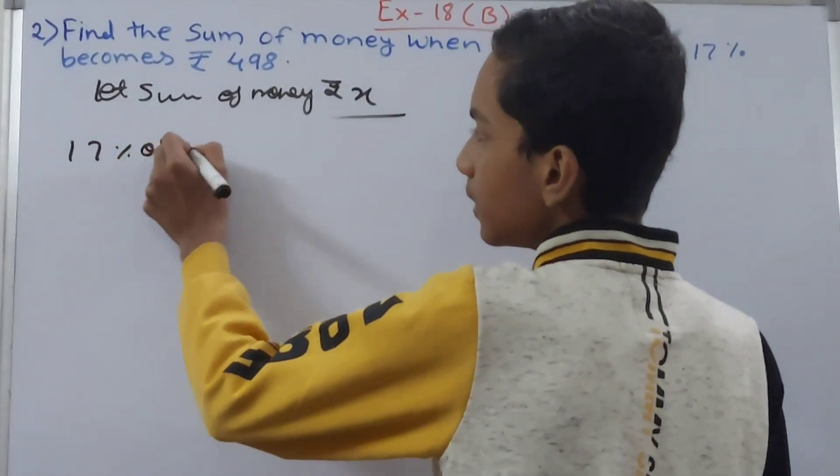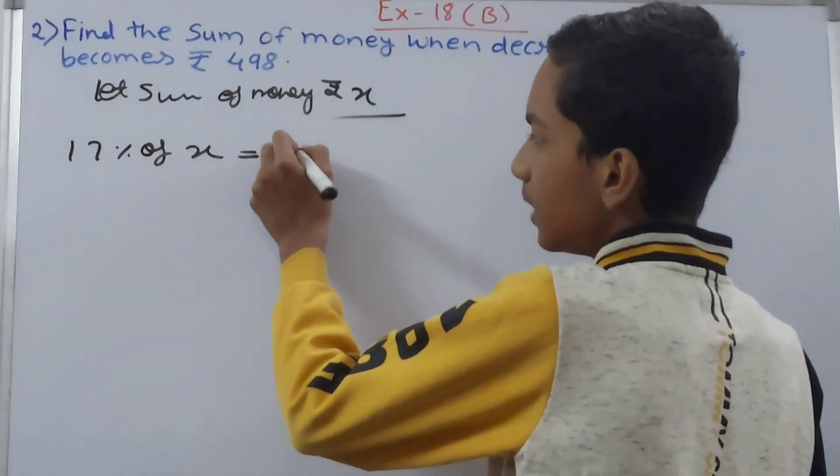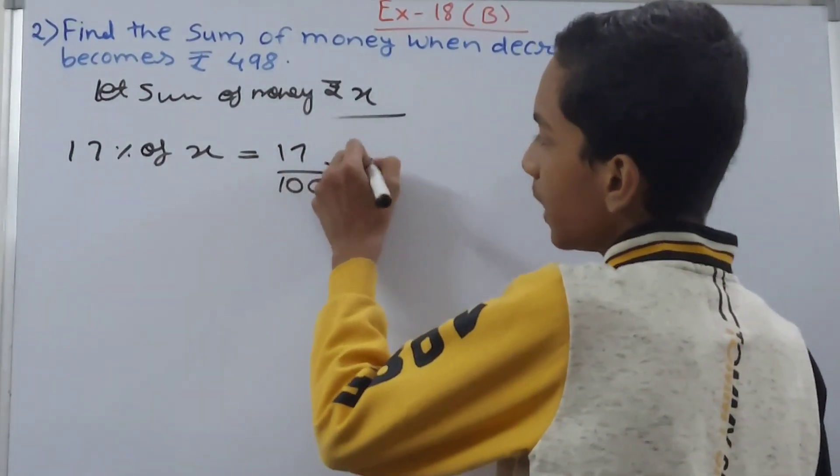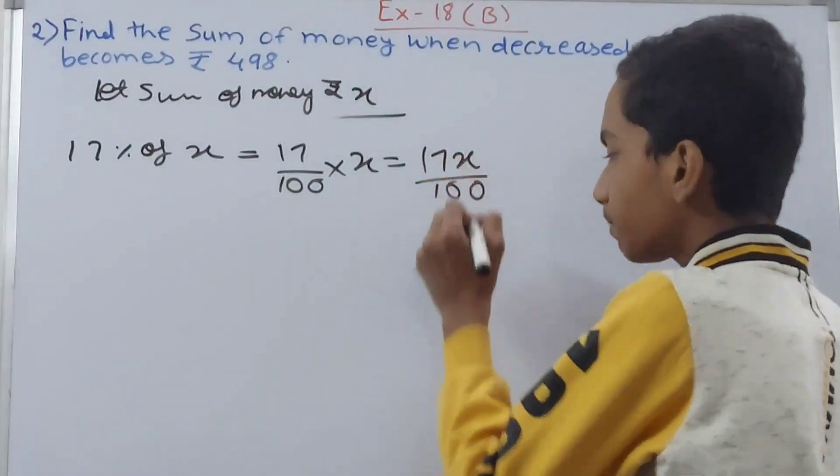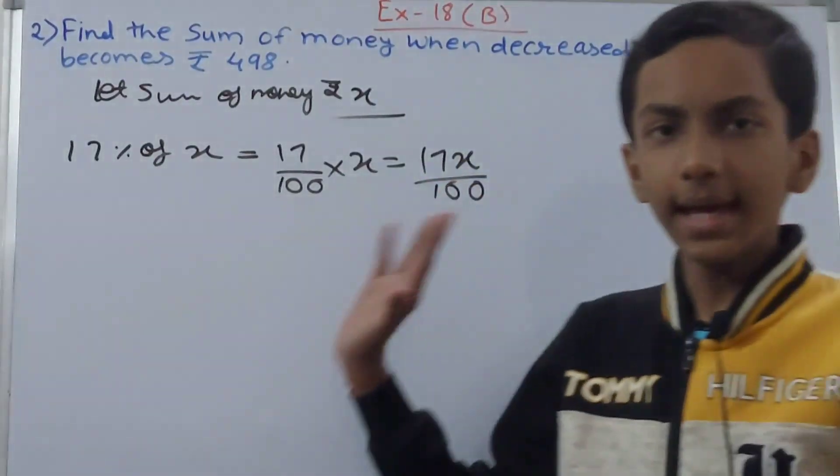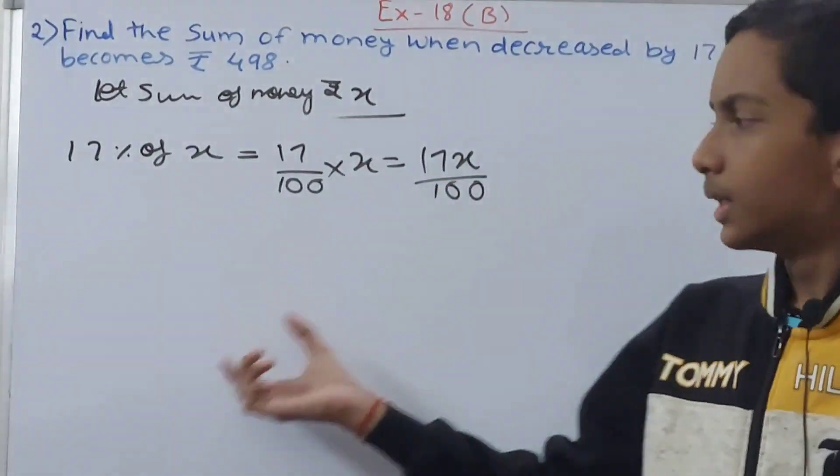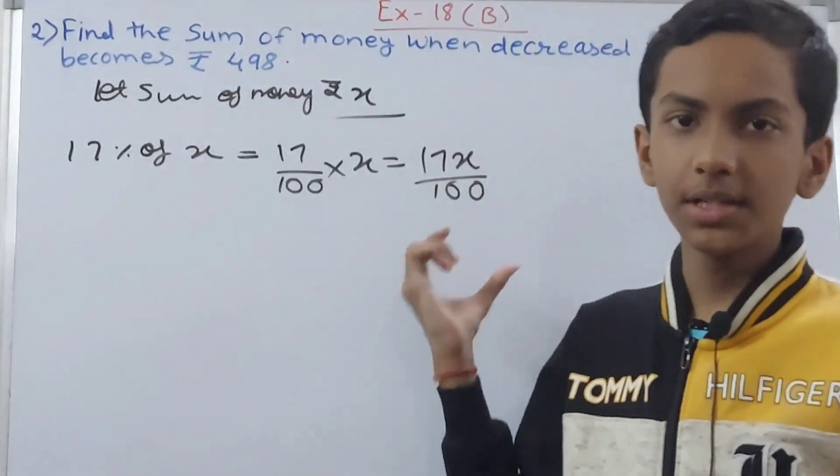17 percent of x means 17 upon 100 into x, which is 17x upon 100. From x, which is our total value, this much money—that is 17x upon 100—is being subtracted.